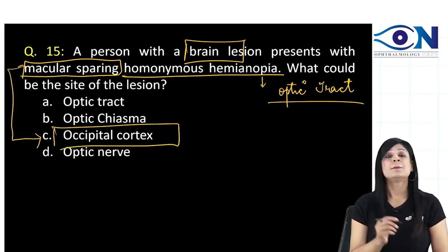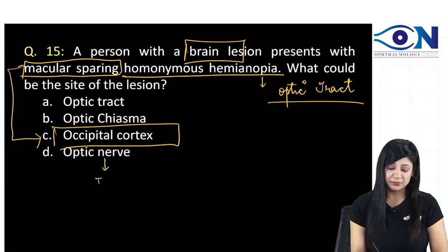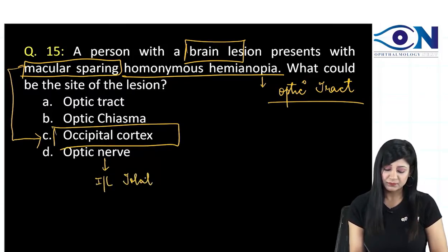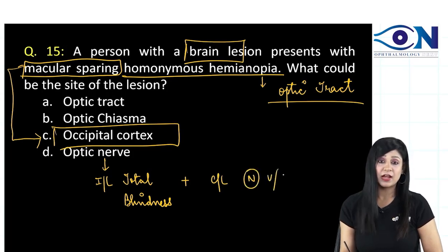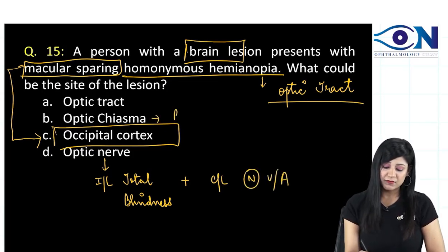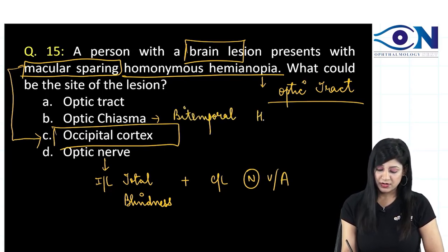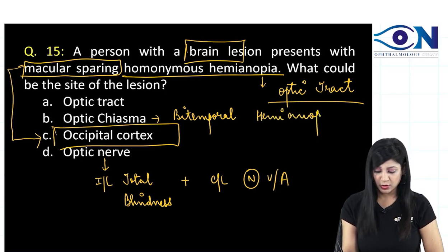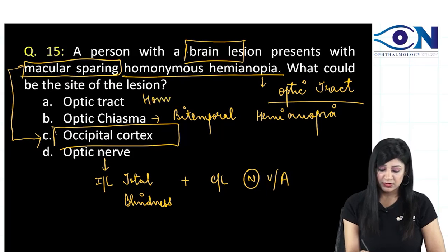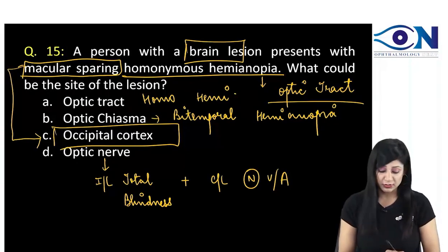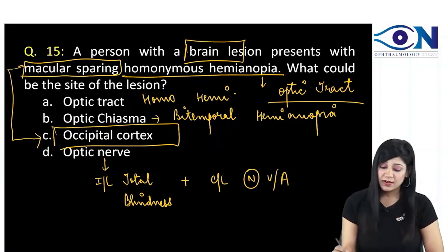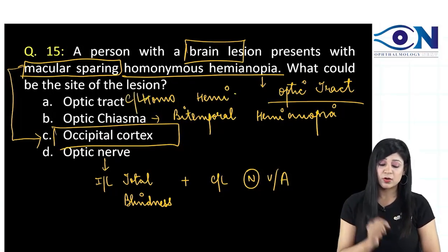The answer will be the occipital cortex. If there is a lesion in the optic nerve, you will have ipsilateral total blindness plus contralateral normal visual acuity. In cases of optic chiasma, we will get bitemporal hemianopia. In cases of the optic tract, we get homonymous hemianopia. But homonymous hemianopia along with macular sparing is found in the occipital cortex. Remember that this homonymous hemianopia will also be contralateral.